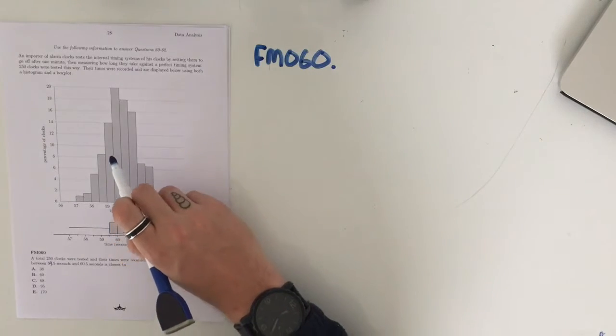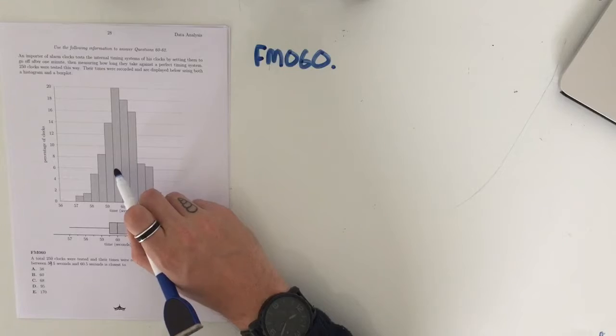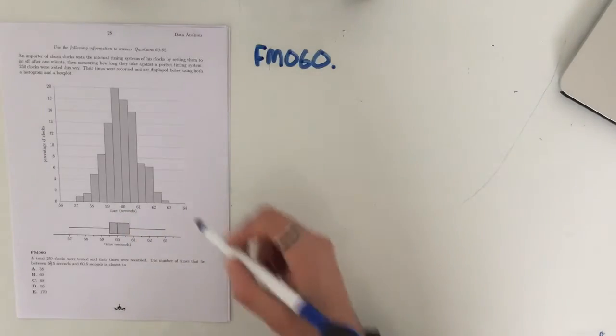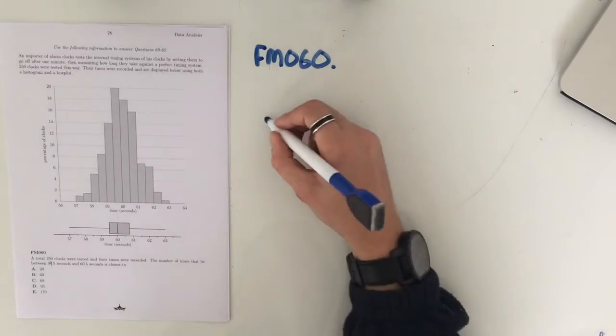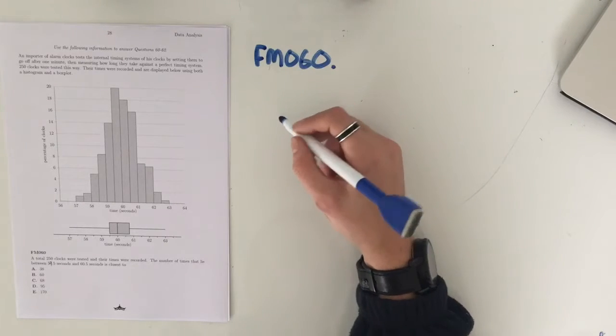First of all, between 59.5, we have this value of 20%, and between 60 and 60.5, there's 18%. So, we've got 20% and 18% falling between 59.5 and 60.5,